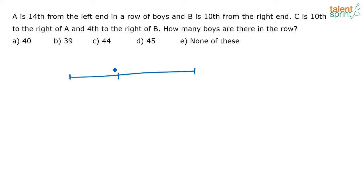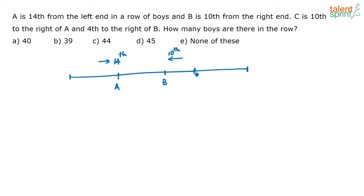A is 14th from the left end, so A's position from the left end is 14th. B is 10th from the right end. C is 10th to the right of A and also fourth to the right of B. So C has to be somewhere to the right of both A and B.